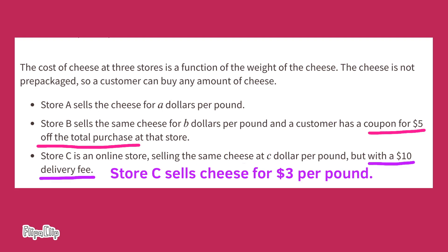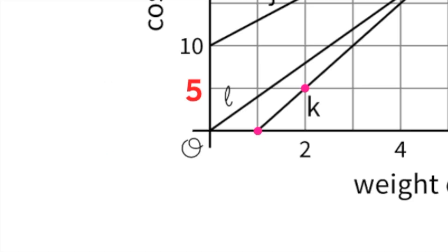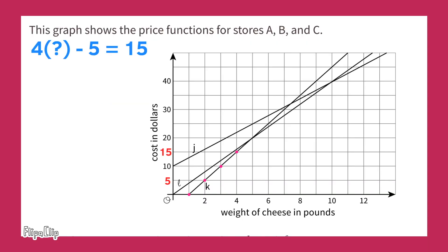Now looking at line K, one pound of cheese costs zero dollars and two pounds costs five dollars. That suggests a five dollar coupon was applied — one pound would be free. Two pounds would be five dollars, three pounds ten dollars, and four pounds fifteen dollars. Line K must represent Store B, the store with the five dollar coupon.